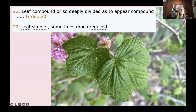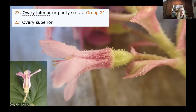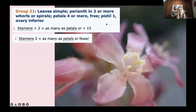From there, we have either leaves compound or deeply divided so as to appear compound, or leaves simple, sometimes much reduced. Then: ovary inferior or partly so, or ovary superior. This is a point where it's really helpful to dissect the flower a little or pull some of the corolla away so you can see in cross section. In this case, we have an inferior ovary, so that takes us to group 21. This is a good point, when you make a big transition within the key, to read the description and double-check — leaves simple.